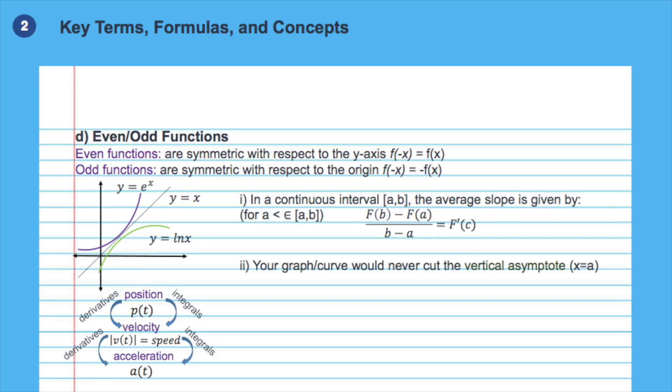Vertical asymptotes are in the format of x equals a. Your curve should never meet the vertical asymptotes since a signifies a value that makes the function undefined. Horizontal asymptotes are in the format of y equals a and can be thought of as the limit of the function as x goes to plus or minus infinity. Remember that it is okay for your function to cut the horizontal asymptotes.